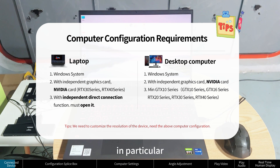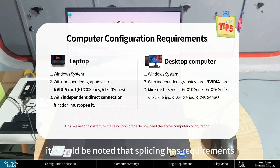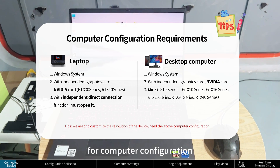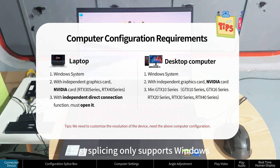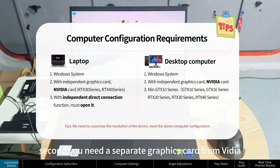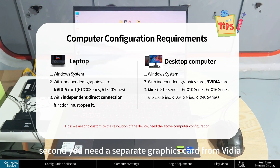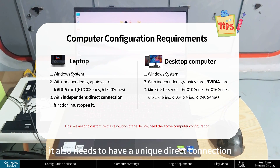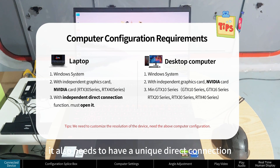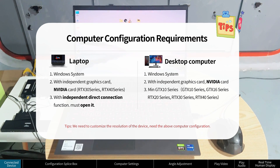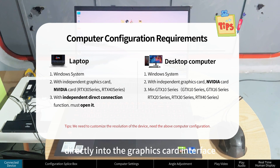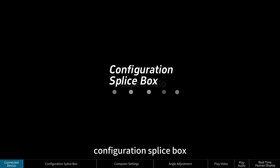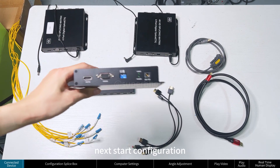It should be noted that splicing has specific requirements for computer configuration. First, splicing only supports Windows. Second, you need a separate dedicated graphics card. If using a notebook, it also needs to have a unique direct connection function. A desktop computer can be plugged directly into the graphics card interface.